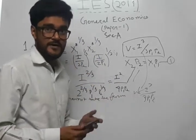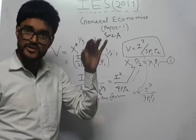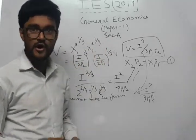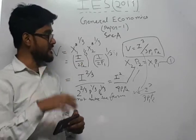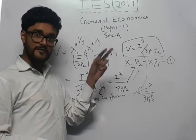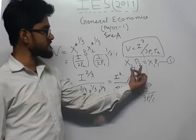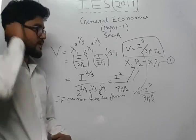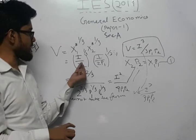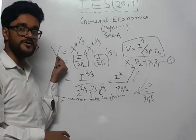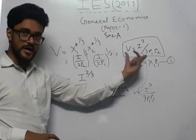To summarize: we wrote down the utility function, set up the Lagrangian (utility plus lambda times the budget constraint), differentiated with respect to x1 and x2 to find one key equation, then solved for optimal x1* and x2*. Substituting those into the utility function gave the indirect utility function as i squared divided by 4·p1·p2, which does not match the given statement. We conclude it is false.